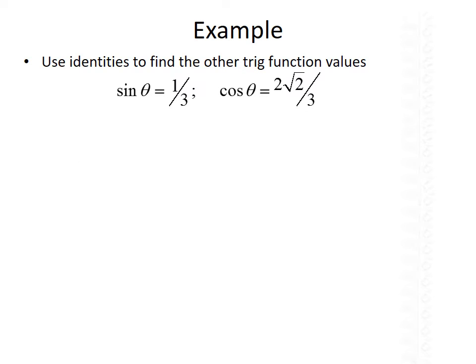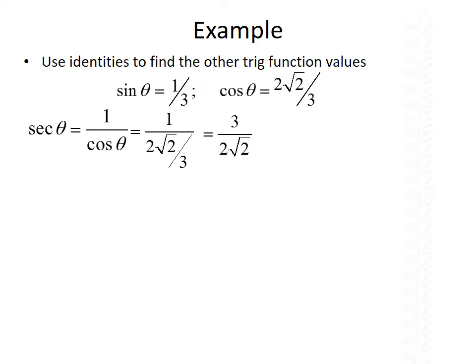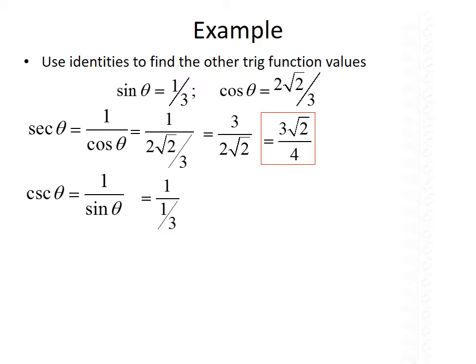As an example, we can use these identities to find other trig function values if we're given some of them. If sine of theta is 1/3 and cosine of theta is 2 root 2 over 3, we should be able to find the other four functions. Let's start by finding secant of theta. From the reciprocal identity, secant of theta is 1 over cosine theta, so that's 1 divided by 2 root 2 over 3. Taking the reciprocal gives 3 over 2 root 2. Rationalizing by multiplying by root 2 over root 2 gives 3 root 2 over 4. Next, cosecant of theta from the reciprocal identity is 1 over sine theta, so that's 1 divided by 1/3, which simplifies to 3.